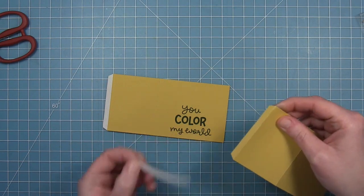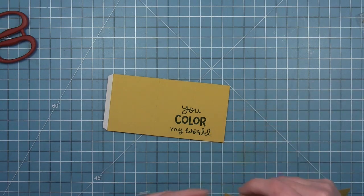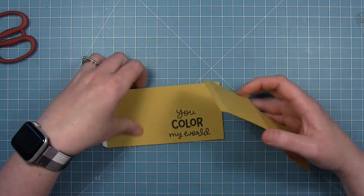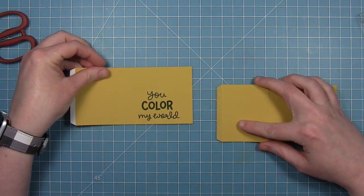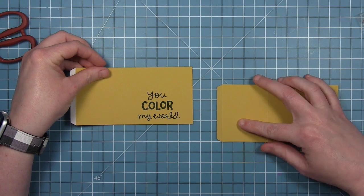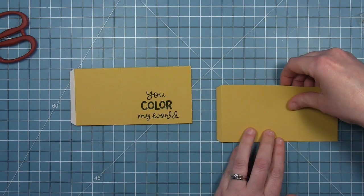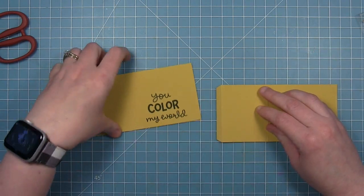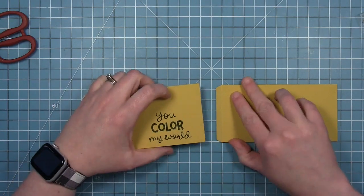I'm also going to go ahead and put these two pieces together. I'm not going to complete the box, just put the two pieces together so that I have a nice long piece, because my die cut is going to go onto both pieces.